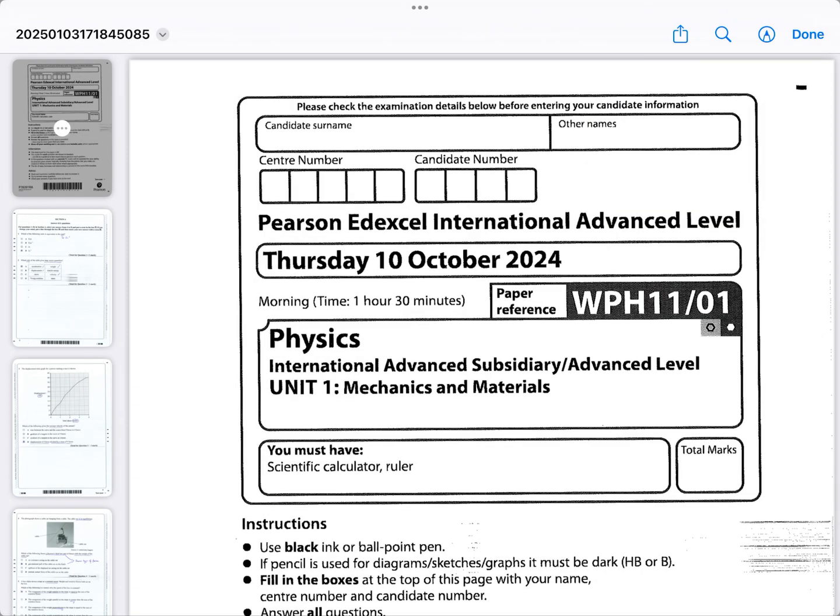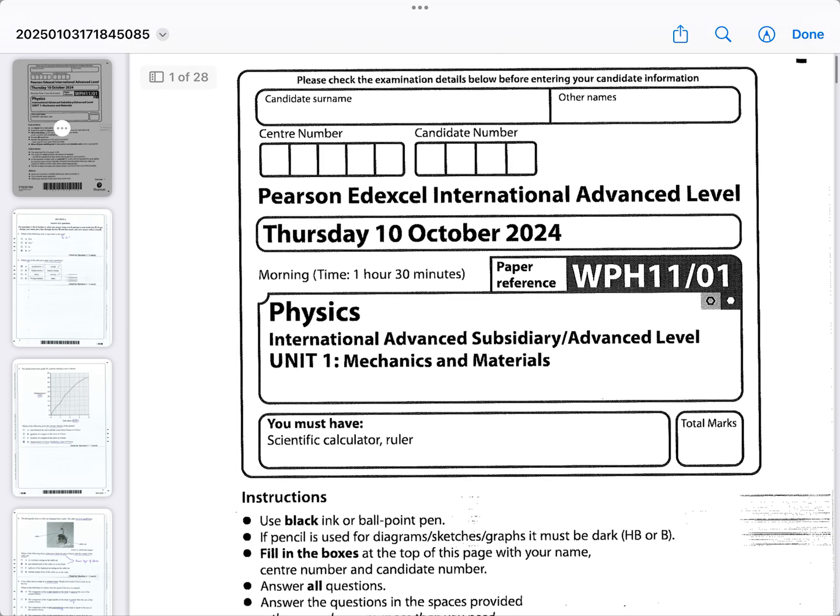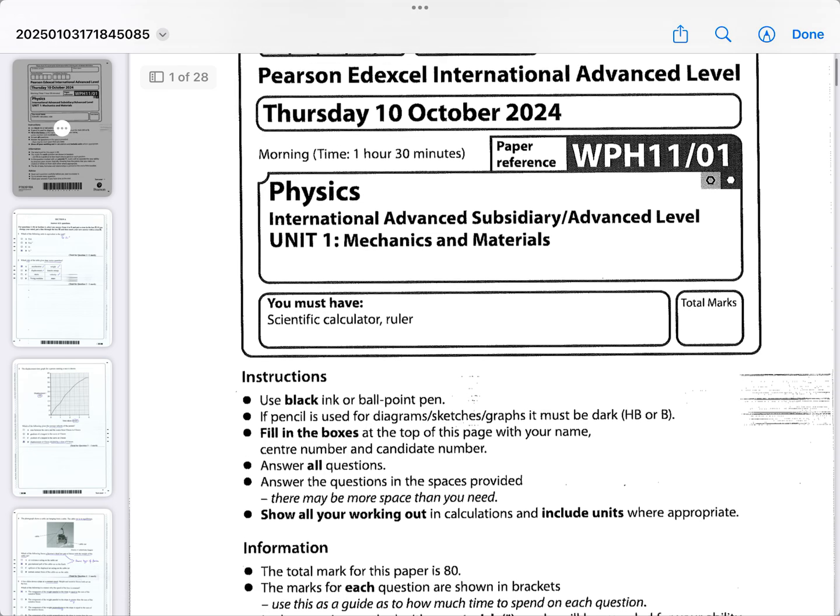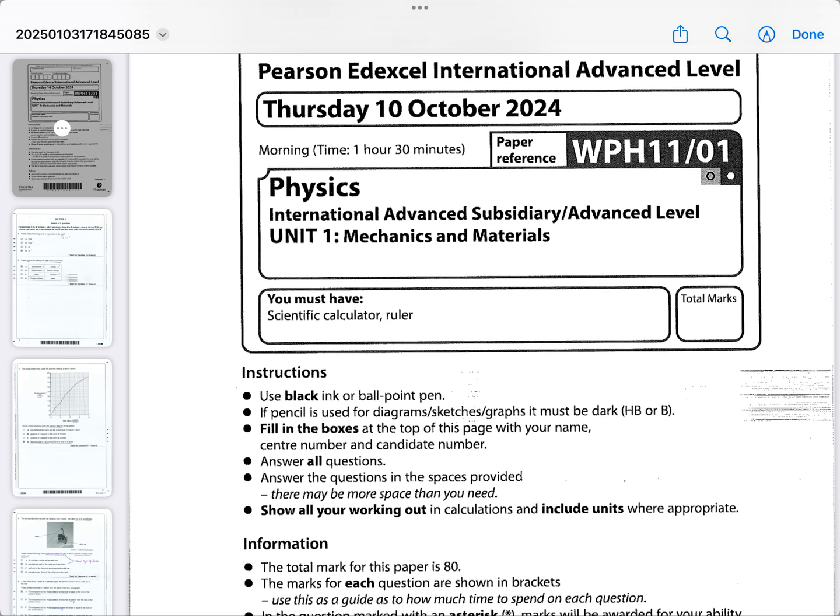Okay, good morning. I have this October 2024 paper for Unit 1 Physics International Edexcel, the A-Level. It's on Unit 1, which is Mechanics and Materials. One of my students is retaking this paper, so I'm using it as a final practice run-through for this one student who's trying to improve her grades before the end of the year.